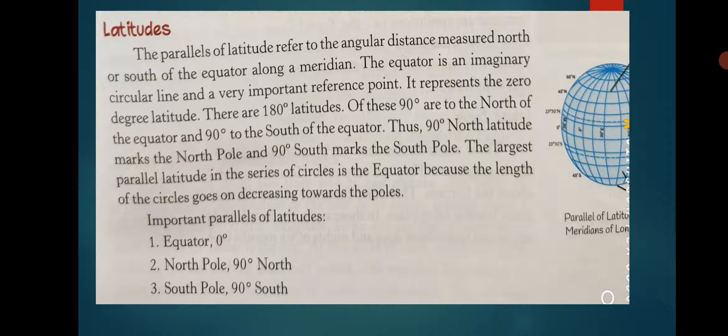The important parallels of latitudes are: 90 degrees north (North Pole), 0 degrees (Equator), 90 degrees south (South Pole), 23.5 degrees north (Tropic of Cancer), 23.5 degrees south (Tropic of Capricorn), 66.5 degrees north (Arctic Circle), and 66.5 degrees south (Antarctic Circle).